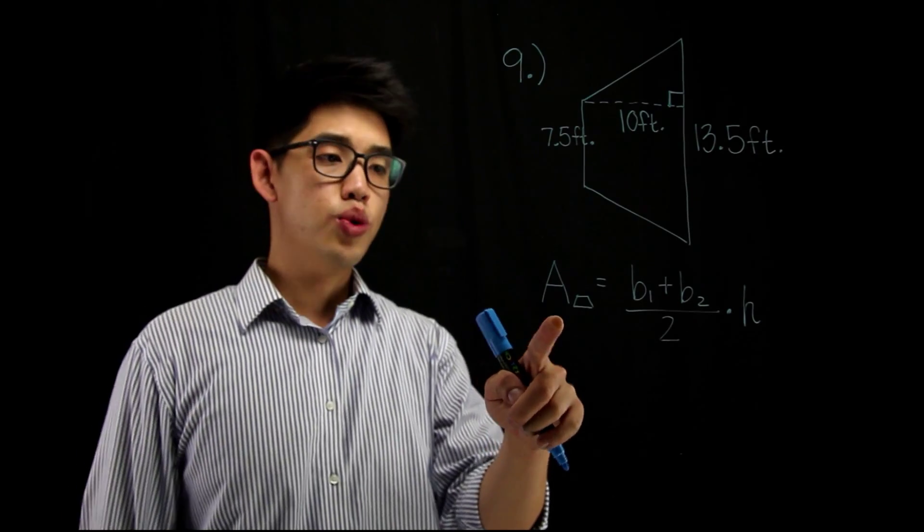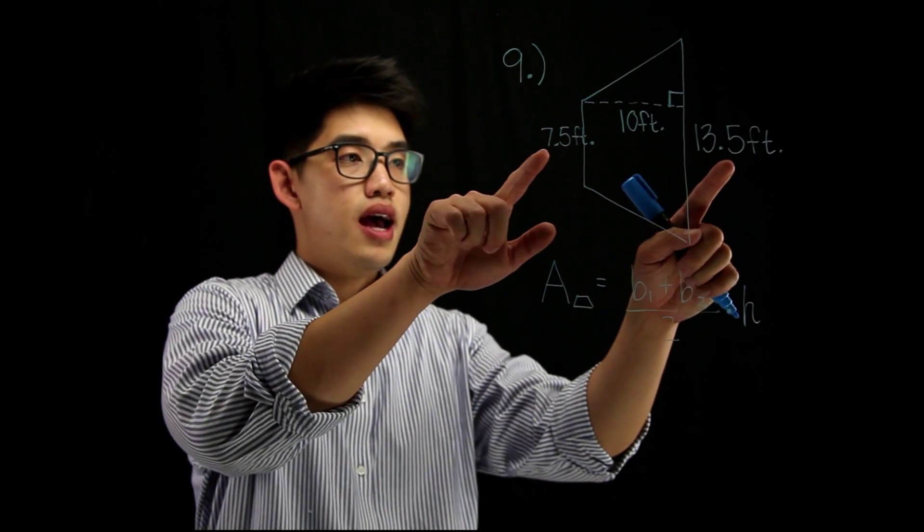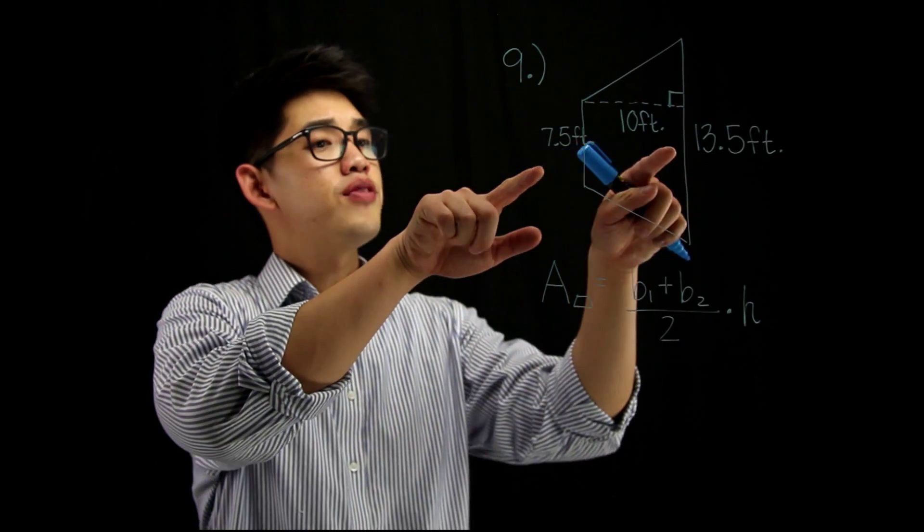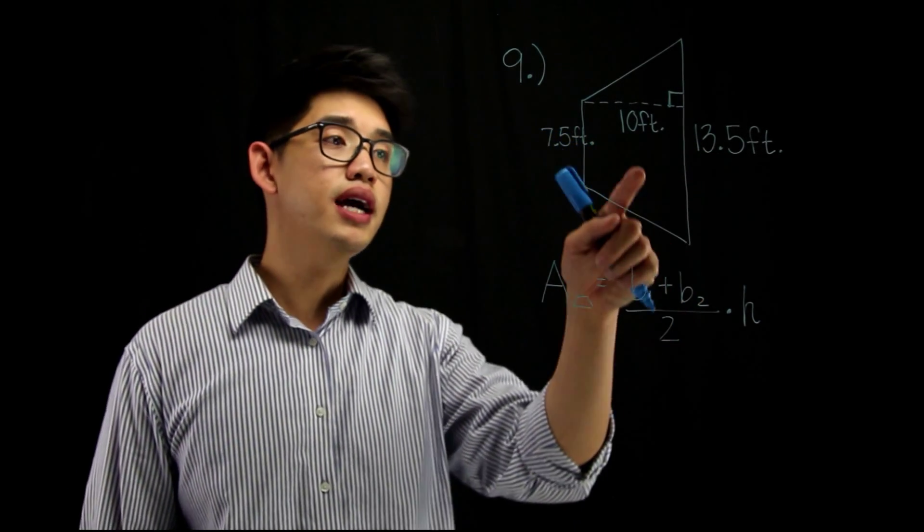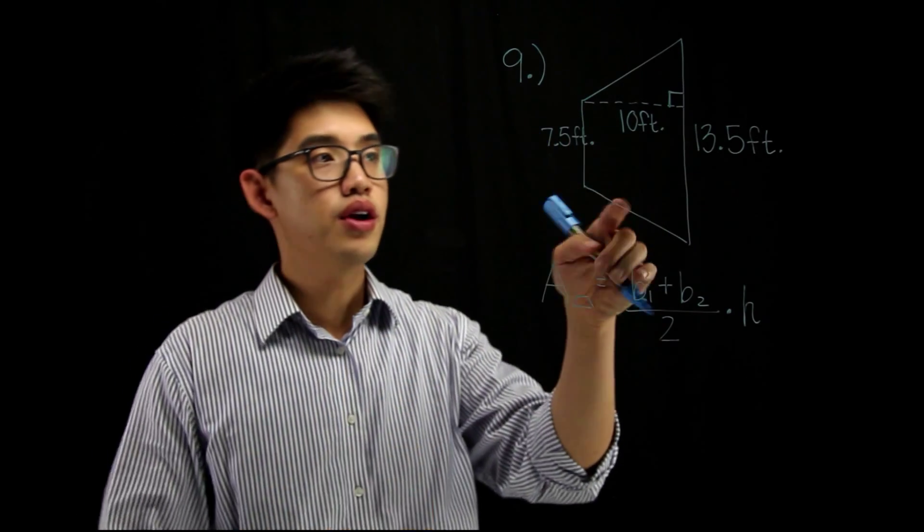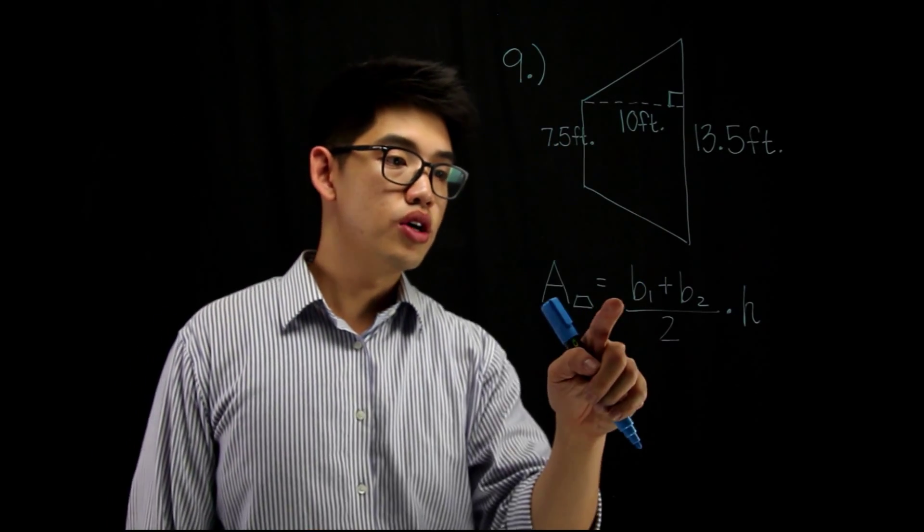To find the area of the trapezoid, we're gonna get the 2 bases, add them up, and then divide it by 2, cause we wanna find the average of these 2 numbers. And then we're gonna multiply it by the height. And in this case, since it's like tilted over, the height is gonna be 10.